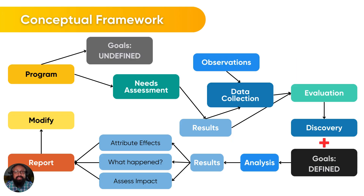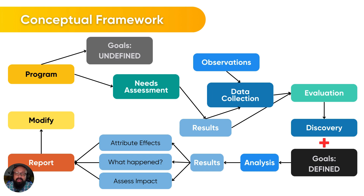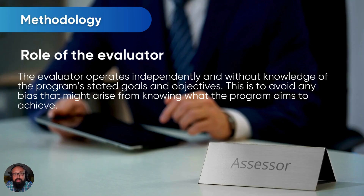Here is the framework I mentioned. It might look like a lot, but if we follow the arrows, we'll be able to find a path of clarity. We know that there's a program with goals. These goals are undefined or unknown to the evaluator. So the evaluator conducts a needs assessment, and it yields results. The evaluator also looks at observations and data, then conducts an evaluation that yields a discovery. He or she then ties this with the goals after understanding what the goals are, analyzes the results, attributes effects to what happened, and assesses the overall impact of this program. The evaluator prepares a report, and if there's a need to modify the program, those changes take place after that.